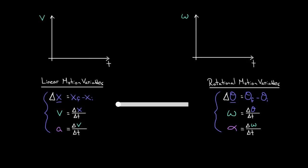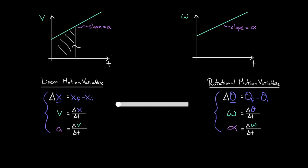And it even works with graphs. If you had a velocity versus time graph, we already know from 1D motion that the slope of that graph equals the acceleration. That means on an angular velocity versus time graph, the slope represents the angular acceleration, because the relationship between omega and alpha is the same as the relationship between v and a. Similarly, the area underneath the curve on a velocity versus time graph represents the displacement. So the area under the curve on an omega versus time graph represents the angular displacement.